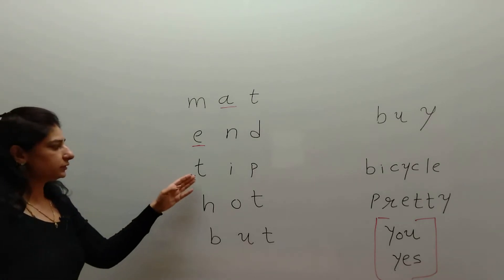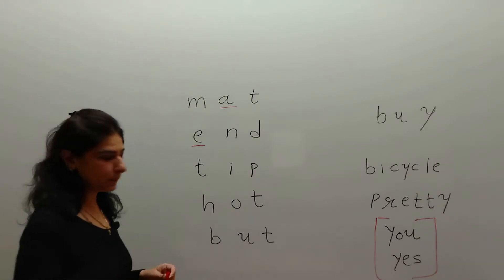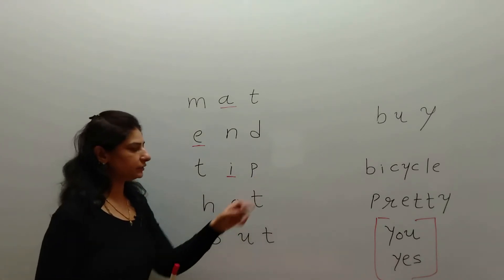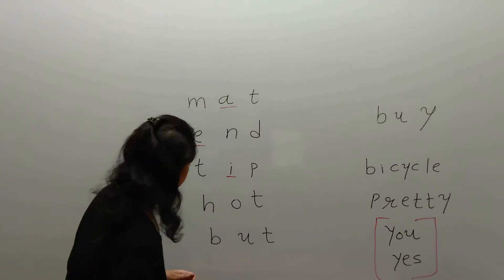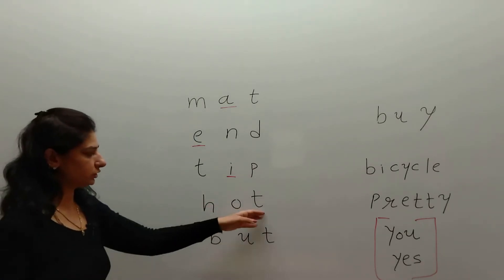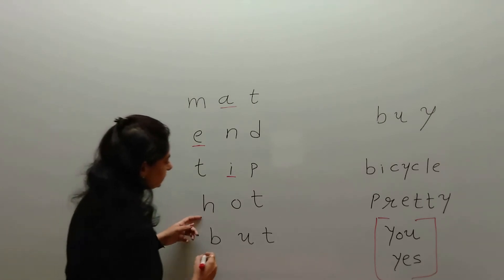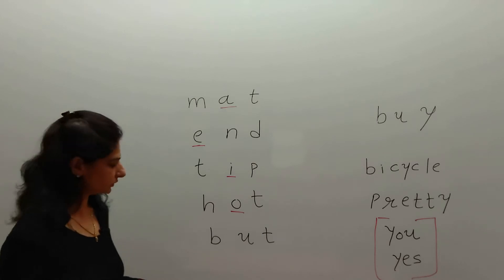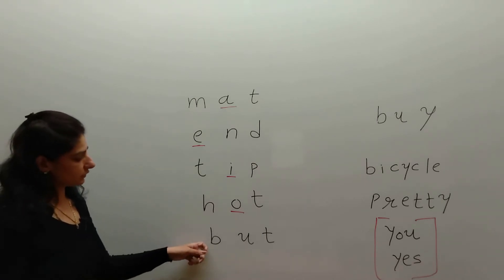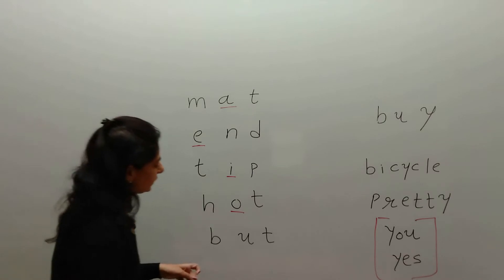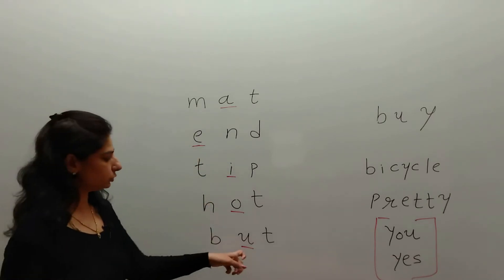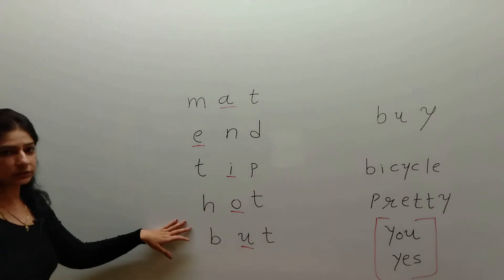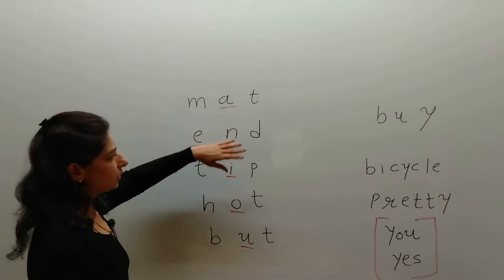Here in the word T-I-P, 'tip': T is a consonant, I is a vowel, and P is a consonant. H-O-T, 'hot': H is a consonant, O is a vowel, and T is a consonant. T-U-T, 'tut': T is a consonant, U is a vowel, T is a consonant. So in these words we find our vowels: A, E, I, O, U.